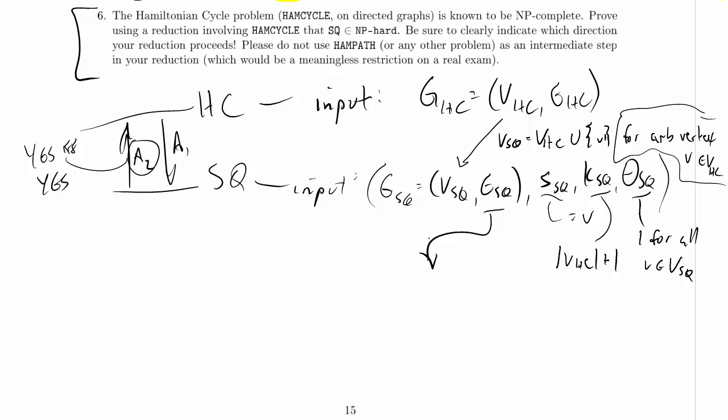that only allows going into V prime. So E_SQ will be equal to E_HC unioned, this time with we're going to add things to it this time instead of deleting things, unioned with we're going to let it go to V prime such that UV is an element of E_HC. And we've just killed two birds with one stone.